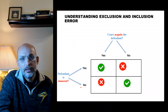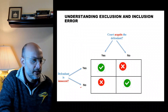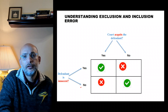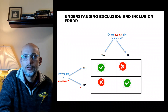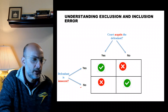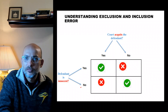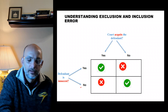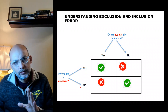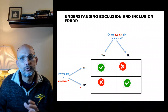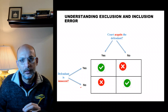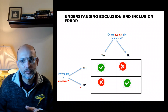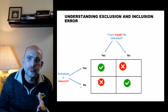The second error: the individual is actually not innocent, however the court was not able to establish enough evidence to conclude that the individual committed the crime, so the court acquits the individual. These are the two errors — think about which one is worse.